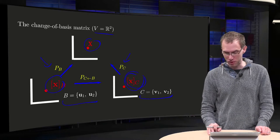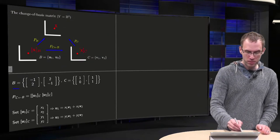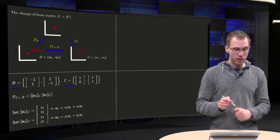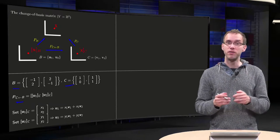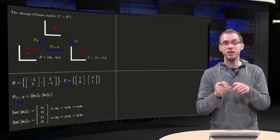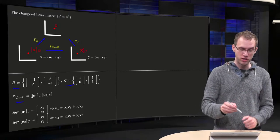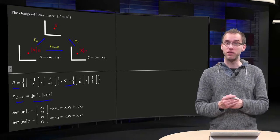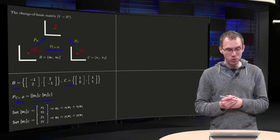That's done as follows. We have our basis b and our basis c. We'll use an explicit example. How can we find P from b to c? We have to express u1 in terms of v1 and v2, in terms of the basis c and u2, in terms of v1 and v2, in terms of the basis vectors of c. So how are we going to do that?